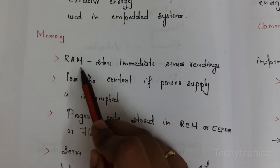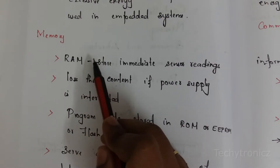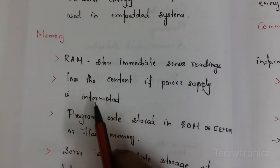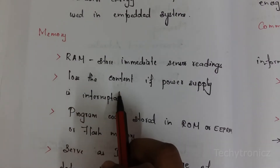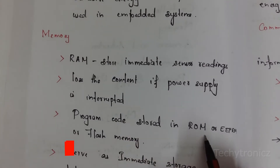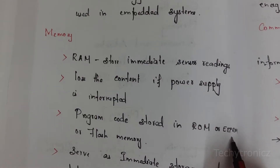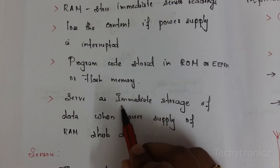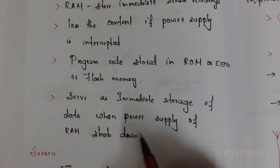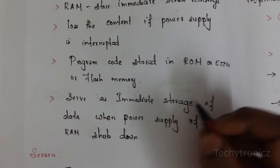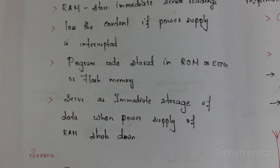The next component is memory. RAM — random access memory — is used for immediate sensor reading storage. The main disadvantage is that when the power supply is interrupted, the RAM content is lost. Program codes are stored in ROM (read-only memory), EEPROM (electrically erasable programmable read-only memory), or flash memory. Flash memory serves as immediate storage of data when the RAM power supply shuts down.